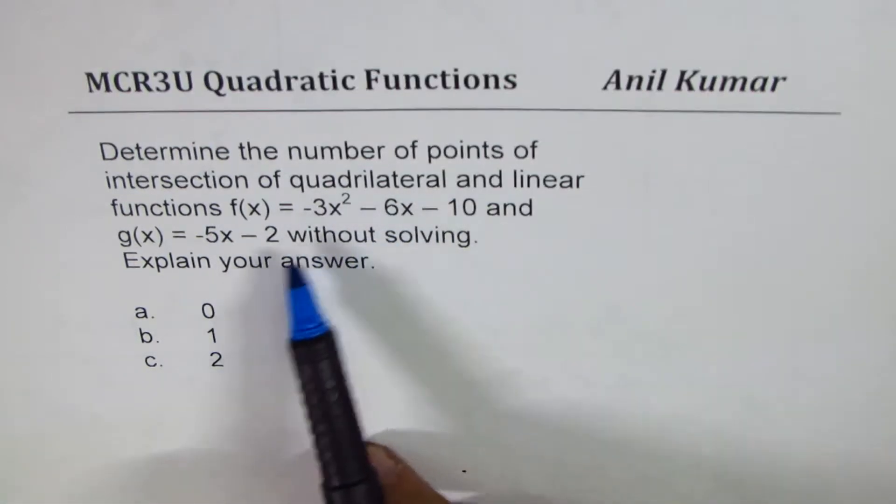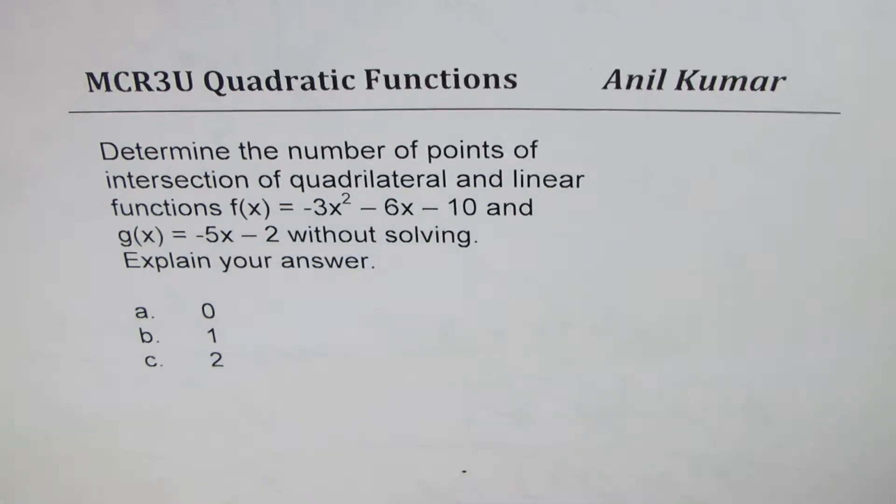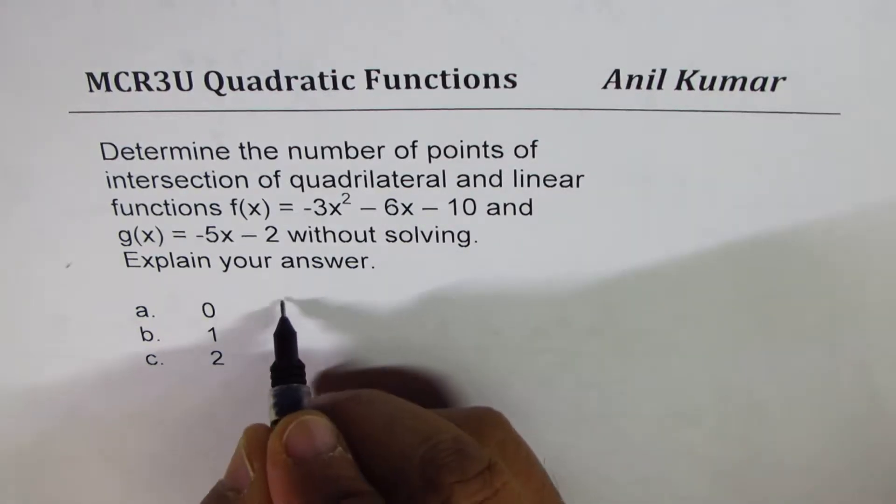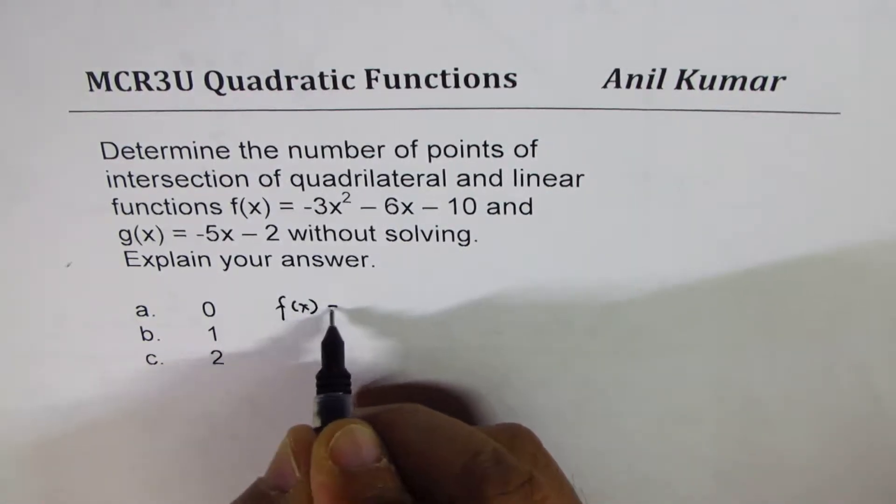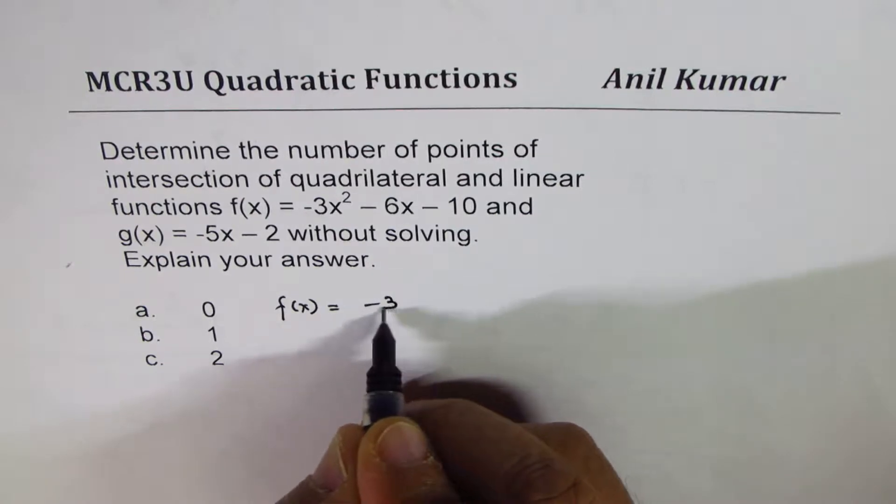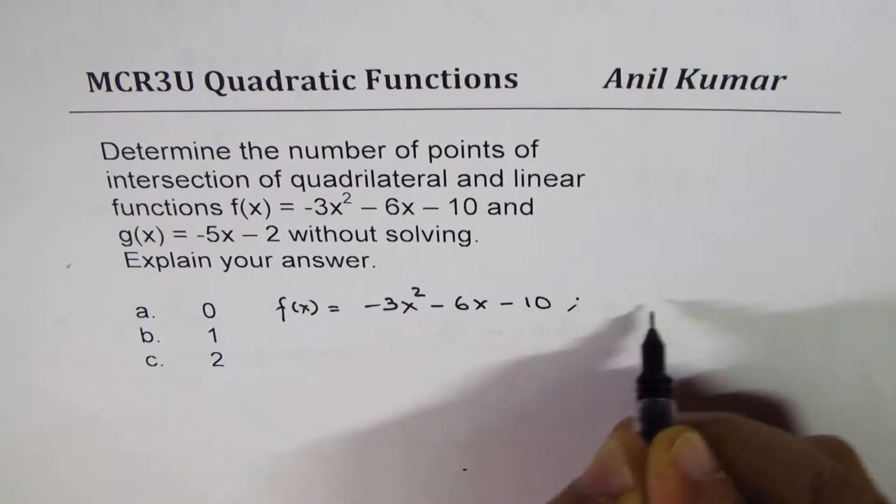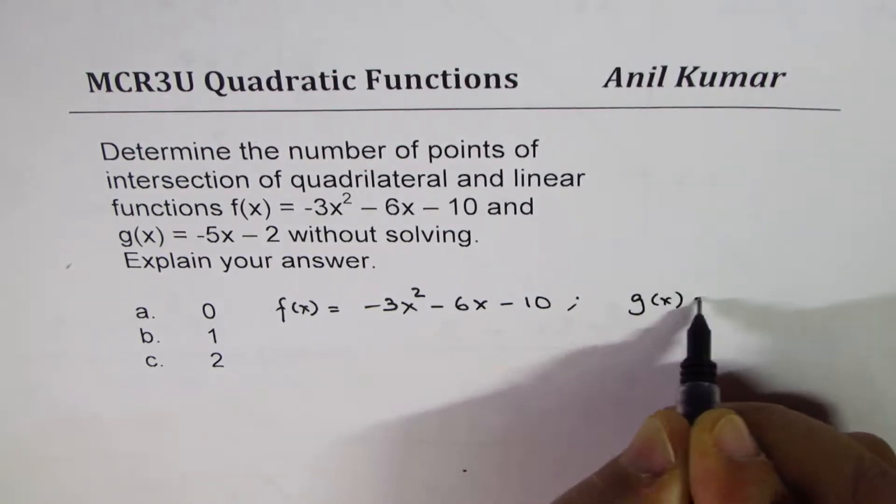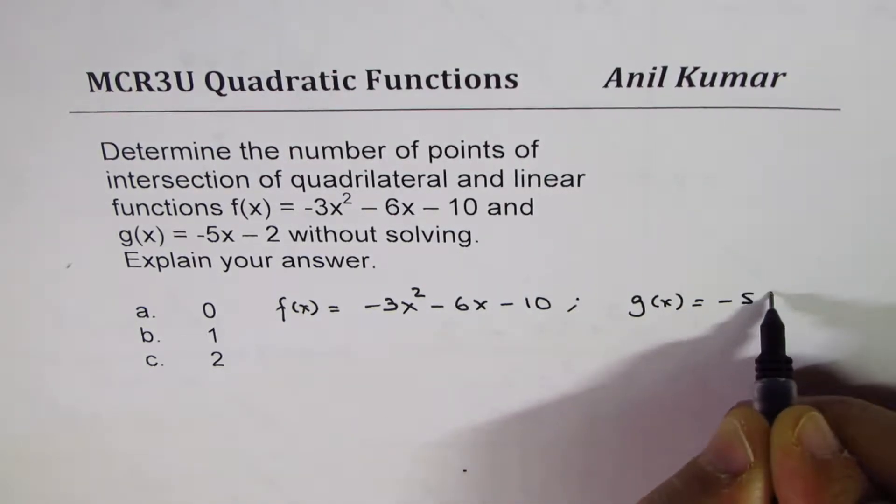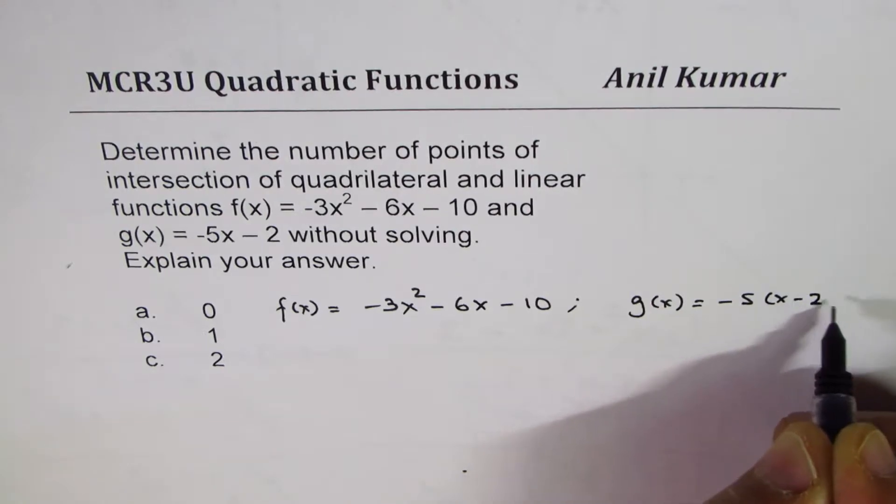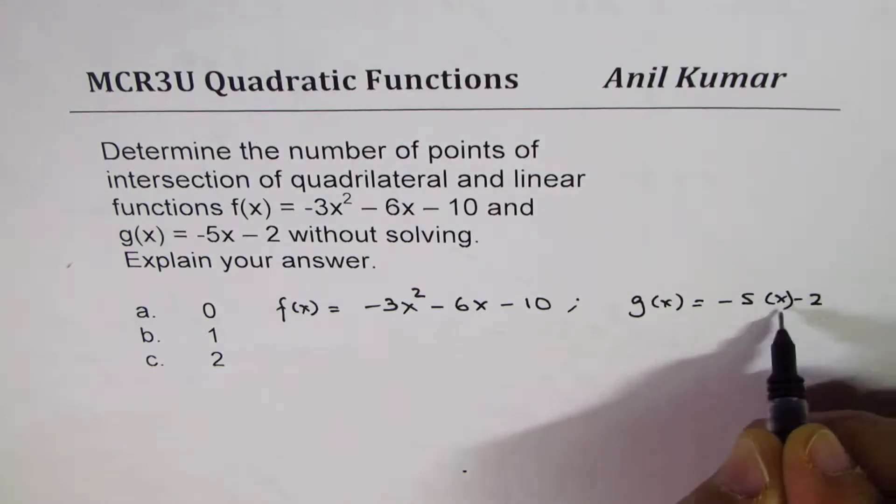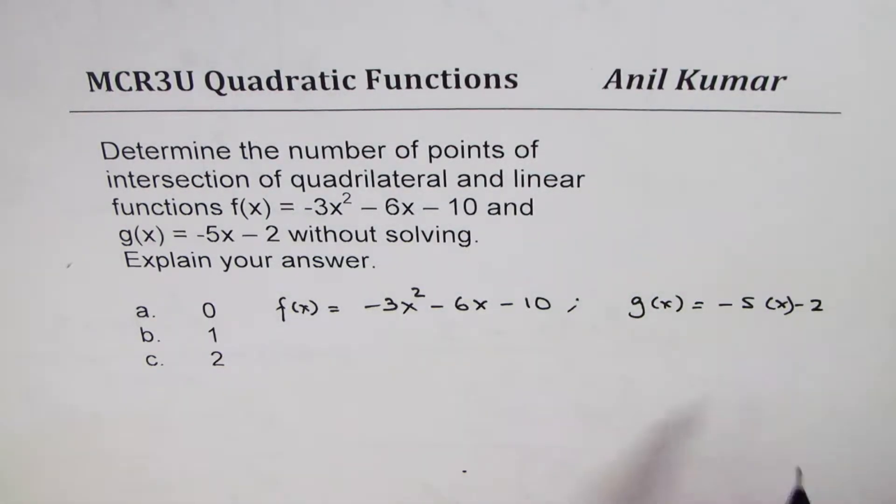Now, what we're given here is that the function f(x) = -3x² - 6x - 10, and g(x) is a straight line: -5x - 2.